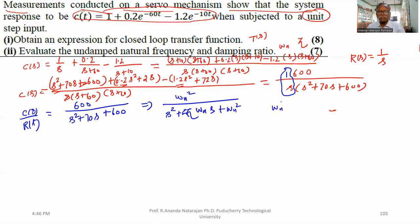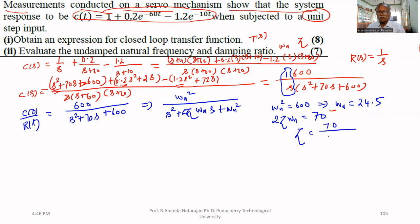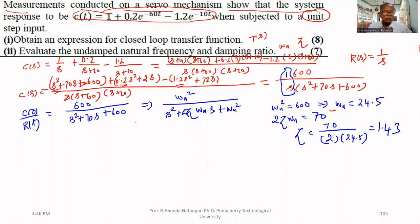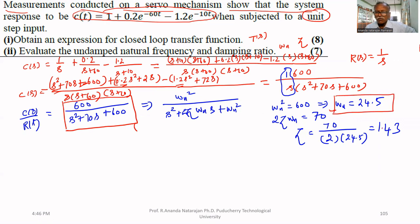Comparing, we get ωn² = 600, which implies ωn = 24.5 rad/s. Also, 2ζωn = 70, therefore ζ = 70 / (2 × 24.5) ≈ 1.43. The transfer function is T(s) = 600 / (s² + 70s + 600), the undamped natural frequency ωn = 24.5 rad/s, and the damping ratio ζ ≈ 1.43, indicating an over-damped system.